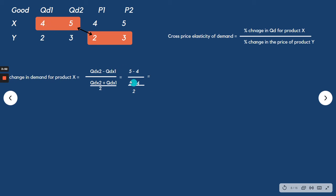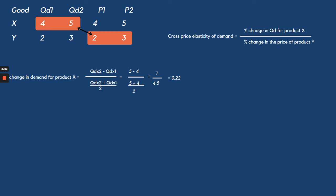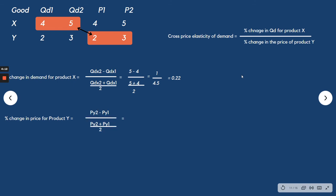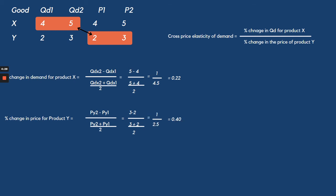For the numerator: Q_dx2 is 5, minus Q_dx1 which is 4, over the average of 5 and 4 — that is 5 plus 4 divided by 2. That equals 1 over 4.5, or 0.222. For the denominator, the percentage change in the price of product Y: price 2 is 3, minus price 1 which is 2, over the average price of 3 plus 2 divided by 2. That equals 1 over 2.5, or 0.40.